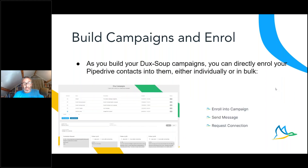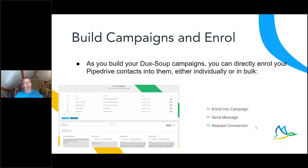Because of the way the integration works, you can now trigger actions from within Pipedrive. As long as you've got the LinkedIn URL populated, that opens up a whole range of possibilities. You can create your campaigns in DuckSoup — and from within Pipedrive, trigger enrollment into a campaign using a dropdown menu with options: Enroll, Send a Message, or Send a Connection Request. This can be done individually against each contact, or you can select multiple contacts and bulk enroll, bulk message, and so on.